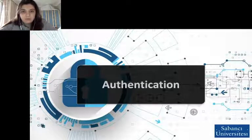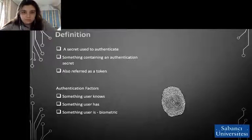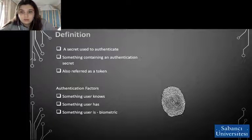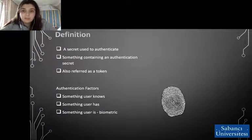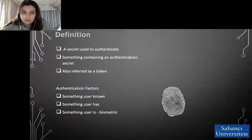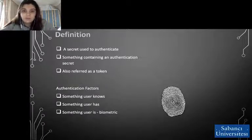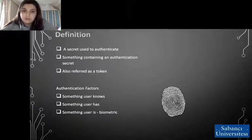In our last subject, we will be talking about authentication. Authentication is a secret used to authenticate something — often referred to as a token. It is the process of determining whether someone or something is in fact who or what it declares itself to be. Authentication technology provides access control for systems by checking to see if a user's credentials match the credentials in a database of authorized users or a data authentication server. Users are usually identified with a user ID, and authentication is accomplished when the user provides a credential — for example, a password — that matches that user ID. Authentication has three factors: something the user knows, something the user has, and something the user is.